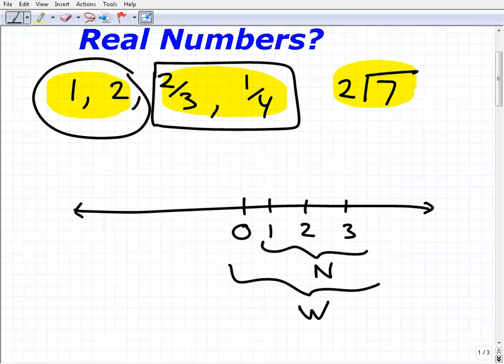Then later on, people started figuring out that it would be pretty cool to have these negative numbers, right? So we kind of throw those in on our little number line, and those are called the integers. So all these, the whole numbers and the negative whole numbers are called the integers.